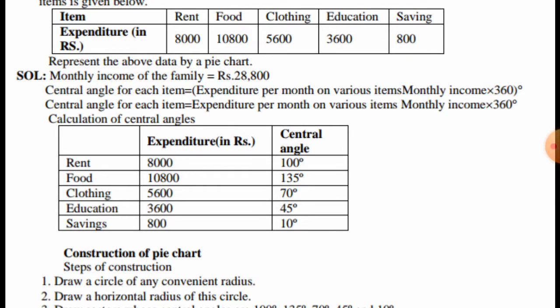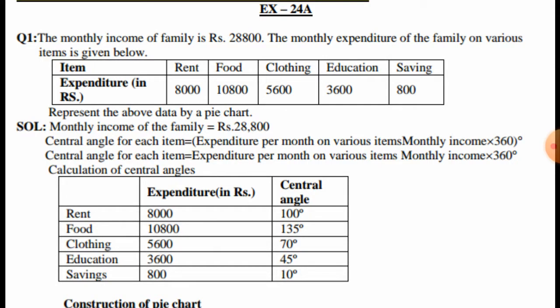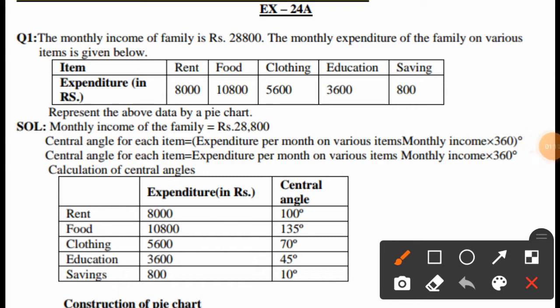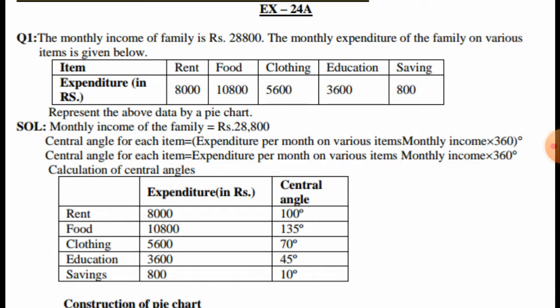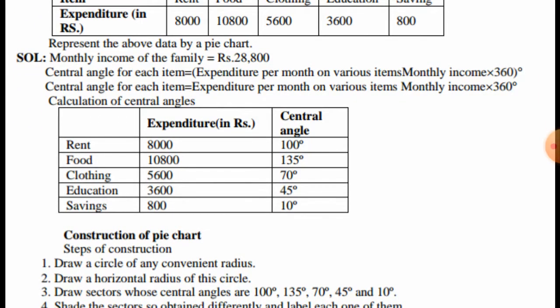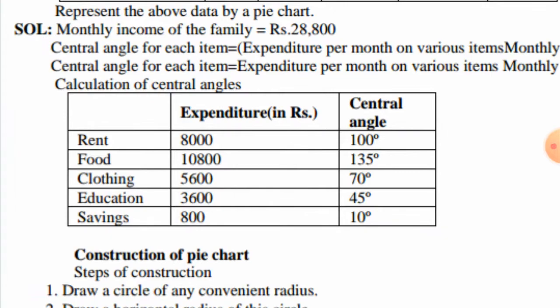First, the total monthly income of the family is 28,800. We have to find the central angle. The central angle is calculated as: expenditure on the item divided by monthly income, multiplied by 360. We make a table showing rent, food, clothing, education, and saving.